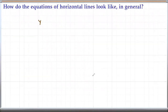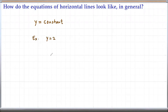Based on the example we just looked at, we see that the equation of a horizontal line has the form y equals a constant. For example, we may have y equals 2 — the one we just looked at — or y equals negative 2, or y equals negative 10. All of these are horizontal lines.